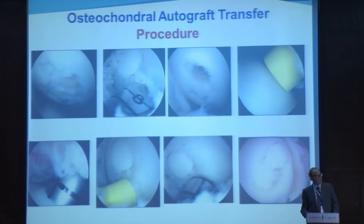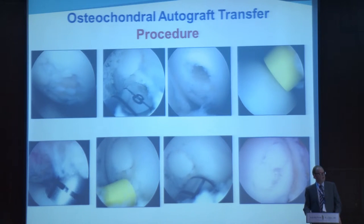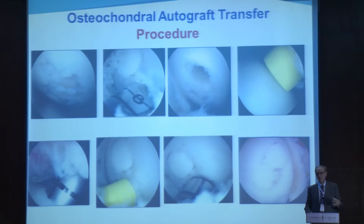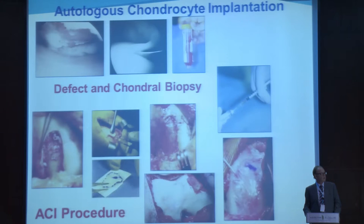Osteochondral autograft transfers are generally confined to lesions of about 2 up to 8 or 10 millimeters. Mosaic plasty, as Chow reports, is a more extensive and demanding procedure done less often — certainly less often in the United States — but gives reliable results for appropriately sized defects.